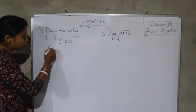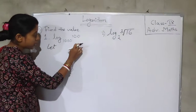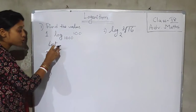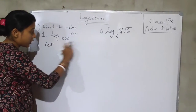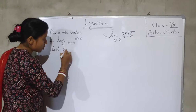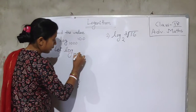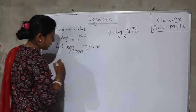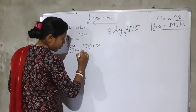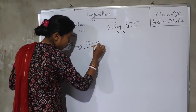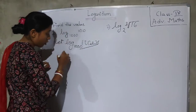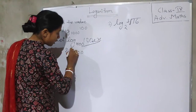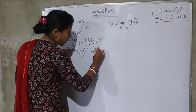So how will we do it? This one is given: log 100 base 1000. We will take this equal to x. So this becomes 1000 to the power x equal to 100, converting into exponential form.